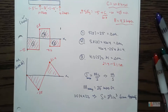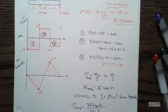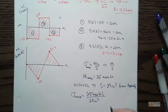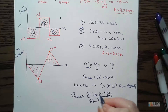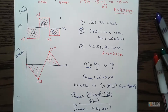Now we just plug everything in. Our max moment is 25 kip-feet and S is 29 inches cubed in the denominator. We need consistent units — the inches cubed is easier to convert, so I'll convert the feet to inches on top. Our max normal stress due to bending comes out to 10.34 ksi (kips per square inch).